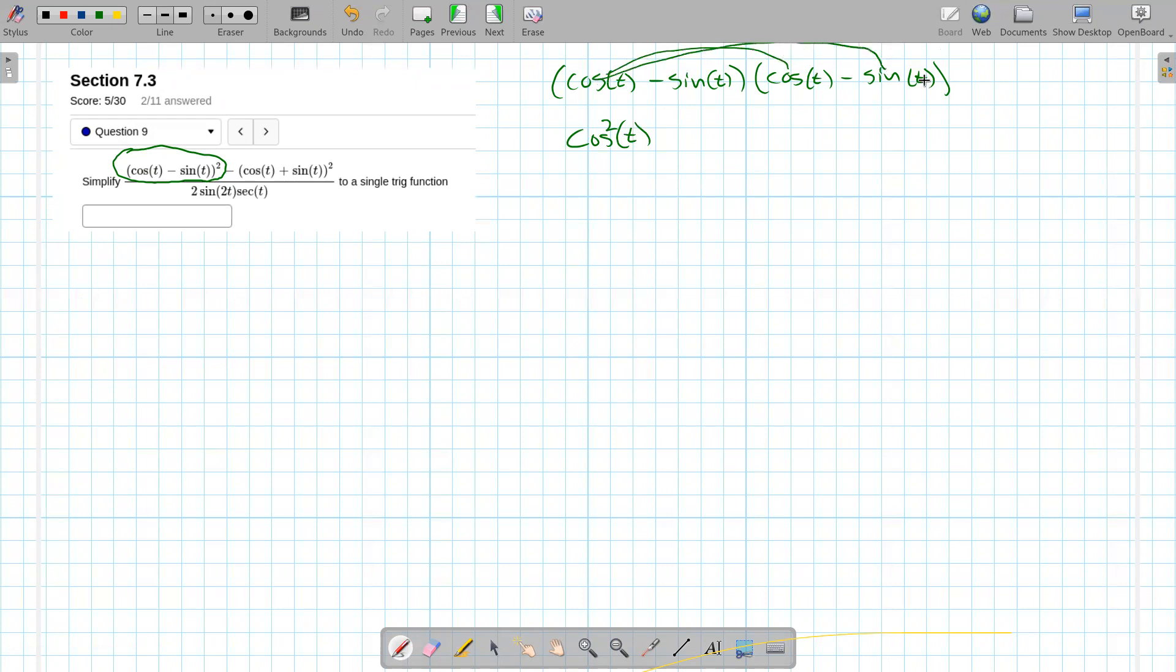And then I'm going to get cosine times negative sine, I'm also going to get sine times negative cosine, which is the same thing, so I'm going to get two of those, sine of t, cosine of t, and then I have a negative sine times a negative sine, which is a plus sine squared of t. And the nice thing about that is the cosine squared plus the sine squared adds up to one. And then I have this minus two sine of t cosine of t.